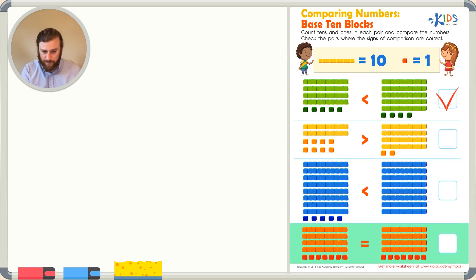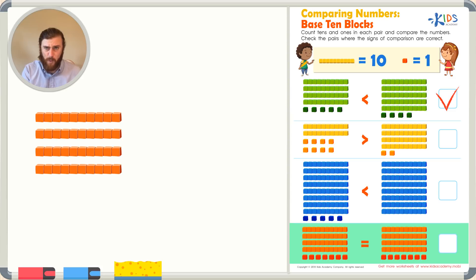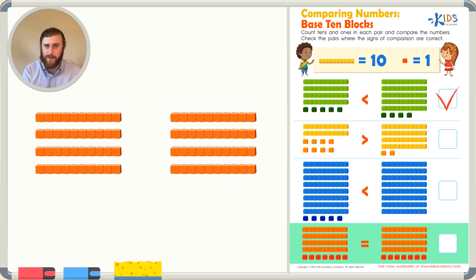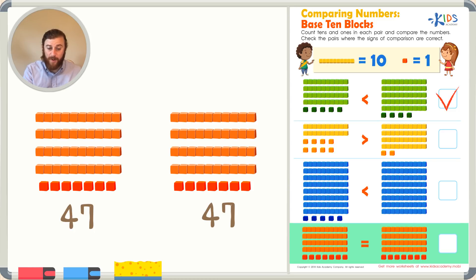Now let's look at the last problem. Again, let's count the base 10 blocks and see how many there are in each problem. Let's start with the longs on the left. There's 1, 2, 3, 4, which means there's 40. Let's count the longs on the right. There's 10, 20, 30, and 40. Also 4 longs. So if they both have 4 longs, let's count the cubes. There's 1, 2, 3, 4, 5, 6, 7. So we have 40 plus 7: 41, 2, 3, 4, 5, 6, 7. 47 on the left. Now let's count the cubes on the right: 41, 42, 43, 44, 45, 46, and 47. There are also 47 cubes on the right.